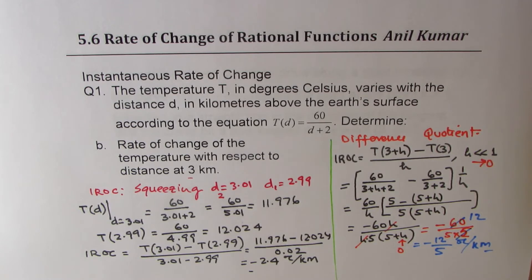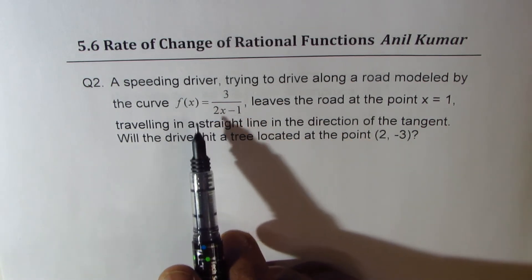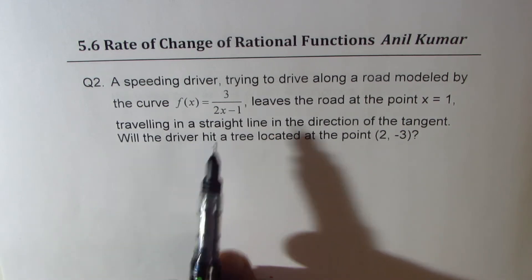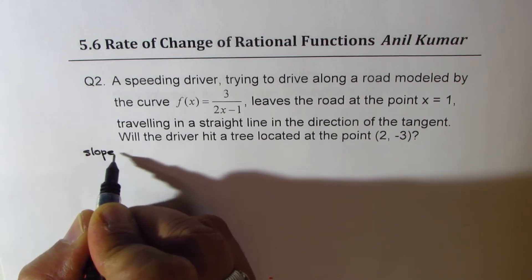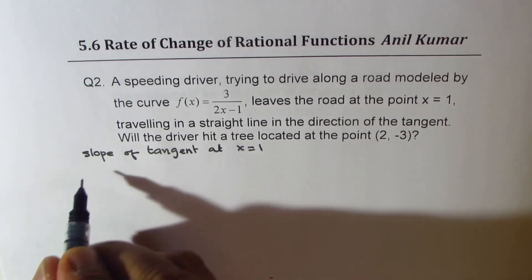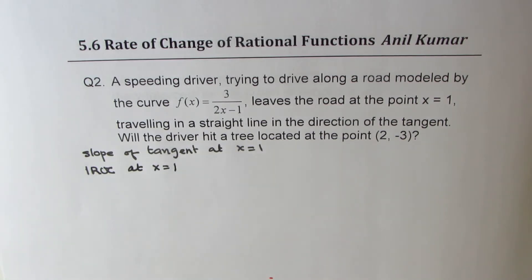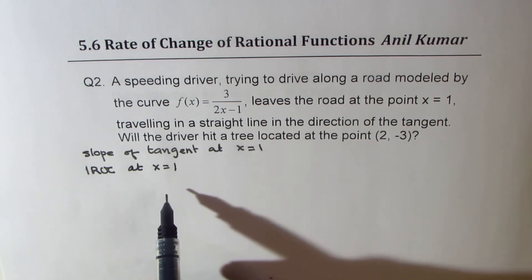Let's take the second example using the difference quotient. A speeding driver traveling along a road modeled by f(x) equals 3 over (2x minus 1) leaves the road at x equals 1, traveling in a straight line in the direction of the tangent. Will the driver hit a tree located at the point (2, minus 3)? On a curved path, if you leave, you go along the tangent line. So we need to find the slope of the tangent — that is, instantaneous rate of change — at x equals 1.